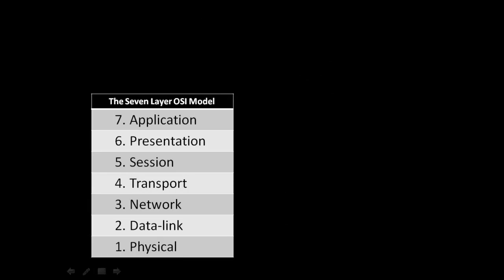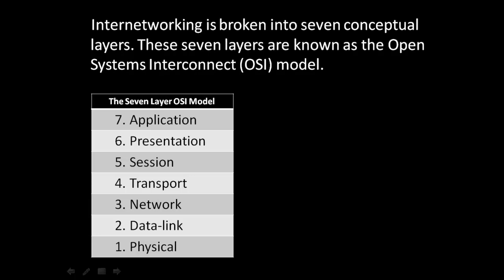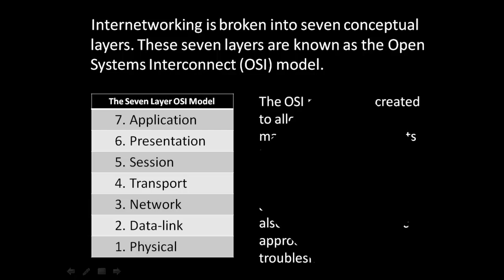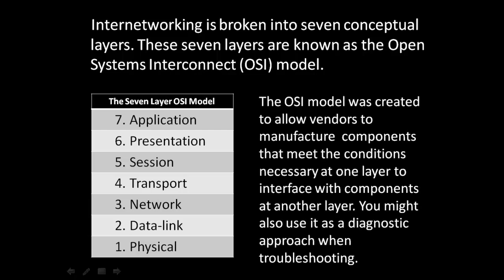Behold the seven-layer Open Systems Interconnect model! Internetworking is broken into seven conceptual layers known as the OSI model. The OSI model was created to allow vendors to manufacture components that meet the conditions necessary at one layer to interface with components at another layer. You might also use it as a diagnostic approach when troubleshooting.